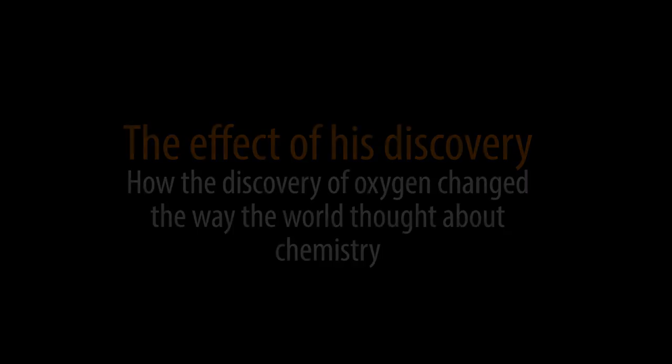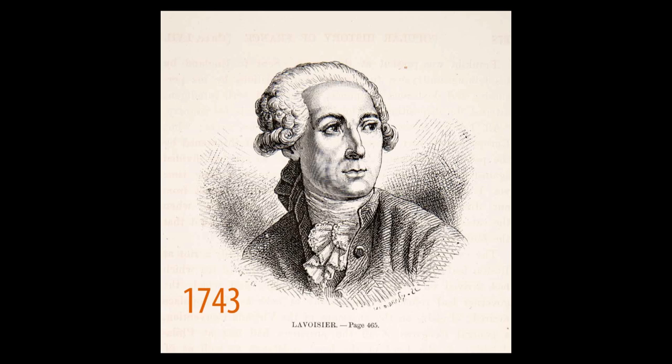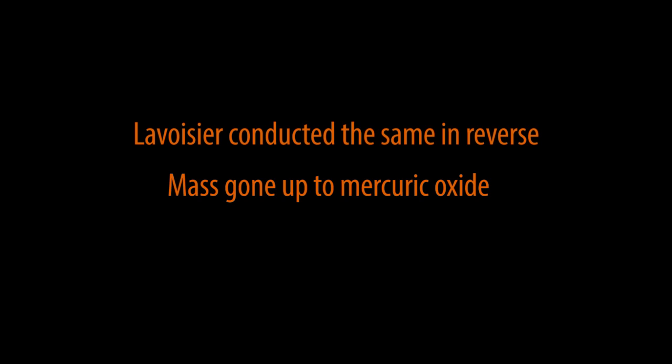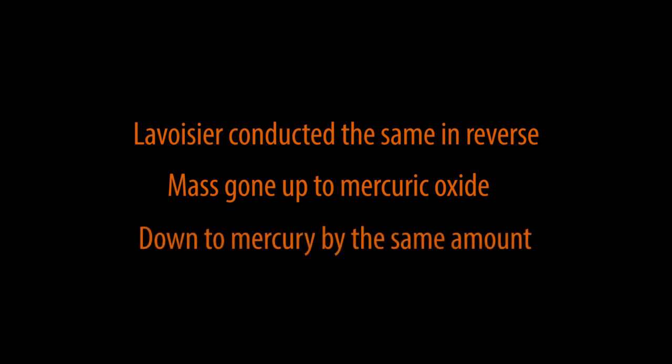Priestley met with French scientist Antoine Lavoisier, born in 1743. They met in 1774 and he told him all about his experiment with mercuric oxide. Lavoisier, intrigued, went back and conducted the exact same experiment in reverse. He carefully weighed some mercury before strongly heating it until it had turned into mercuric oxide. He then weighed it again and found the mass had increased by a substantial amount — it had taken something in. He heated it again until it decomposed into mercury and found the mass had returned to the exact original amount. This substance — oxygen — was being taken into mercuric oxide and released from it to turn back into mercury. He thus disproved phlogiston, and therefore it was he, and not Priestley, who went down in history as the father of modern chemistry.